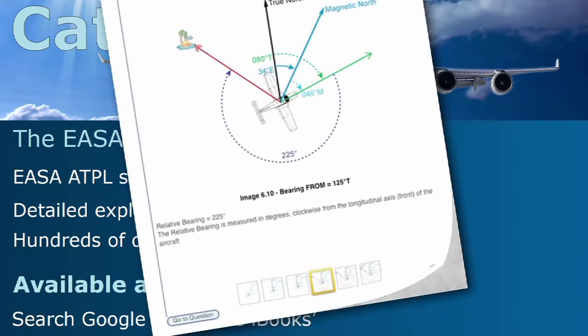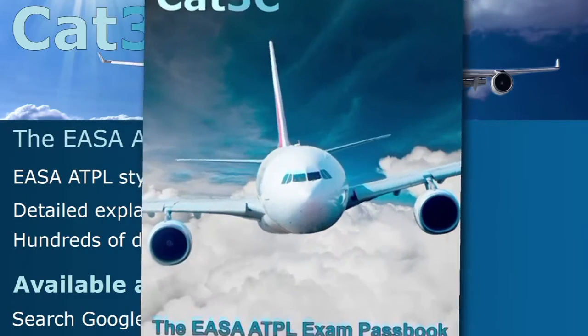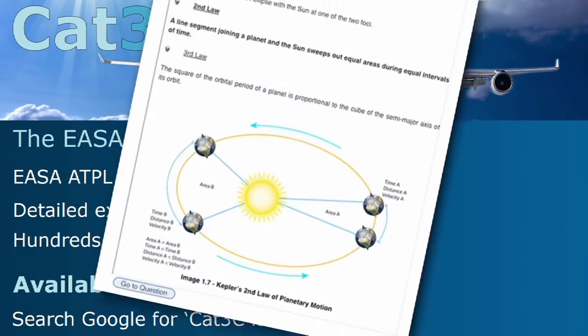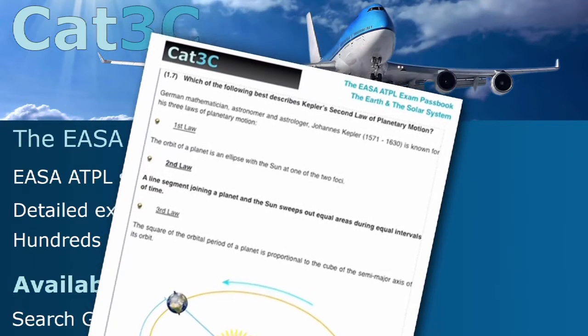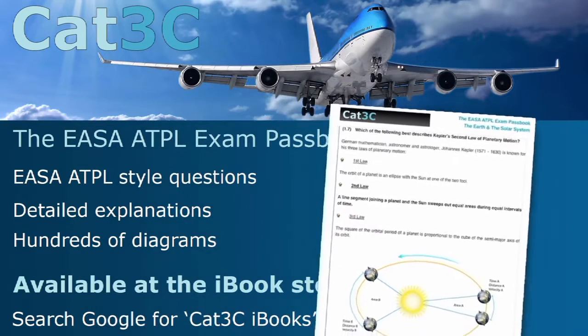The passbooks contain hundreds of exam-style questions and are supported by clear, in-depth explanations and interactive diagrams. The link to the iBooks can be found on the webpage below or at the Cat3C website at the Bookstore tab.